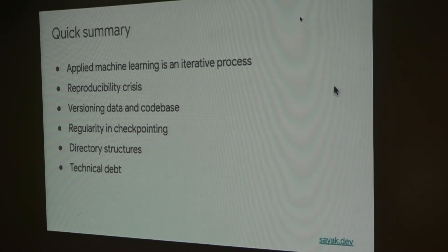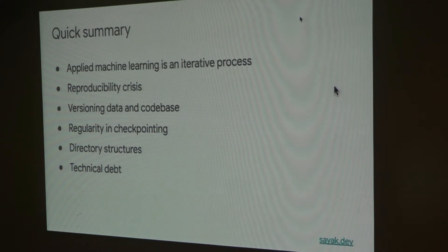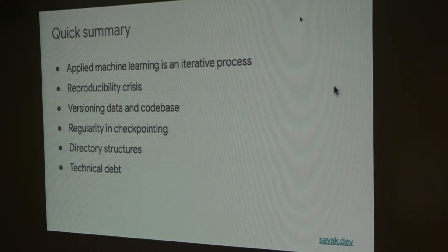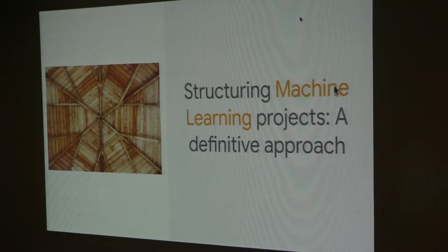Here's a quick summary of the things we have discussed: applied machine learning is highly iterative; machine learning projects come with a reproducibility crisis that makes it hard to deploy with sustainable reproducibility; there is the challenge of versioning data and code bases separately; there are issues with model checkpointing; there can be inconsistent directory structures for different modules; and there can be high-interest technical debt raised from machine learning.